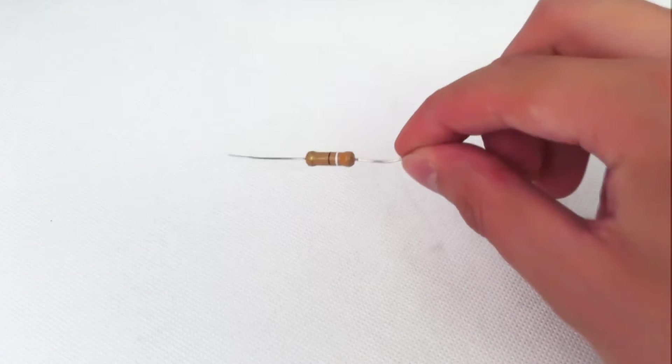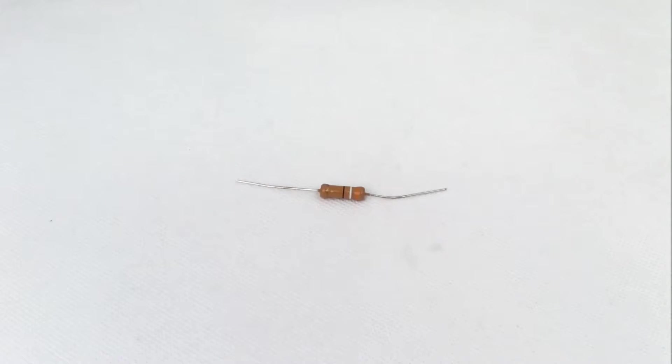Too much electric current can damage electronic components. Resistors like these keep circuits working by directing the right amount of current to the right places. But how do resistors work?